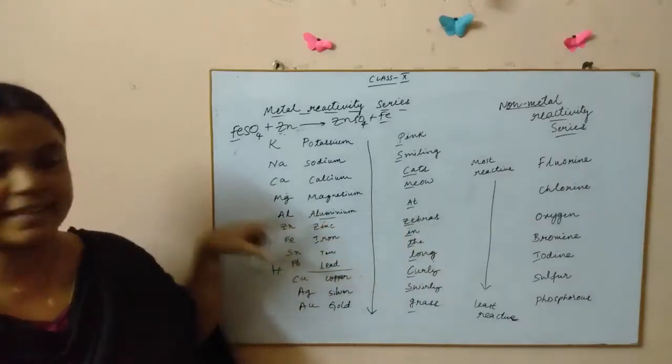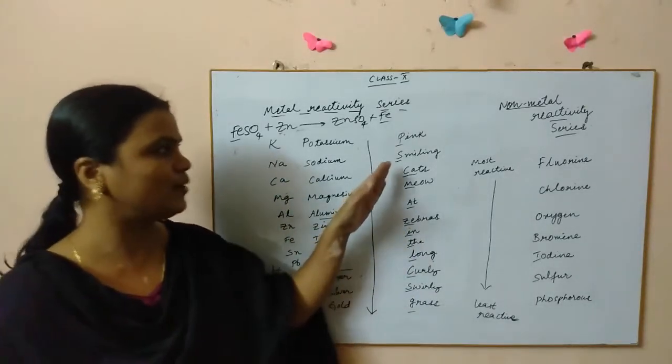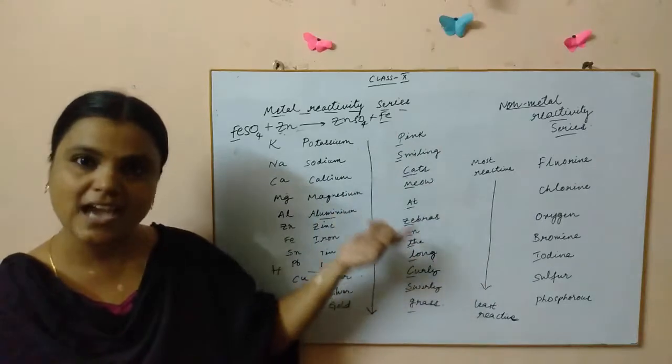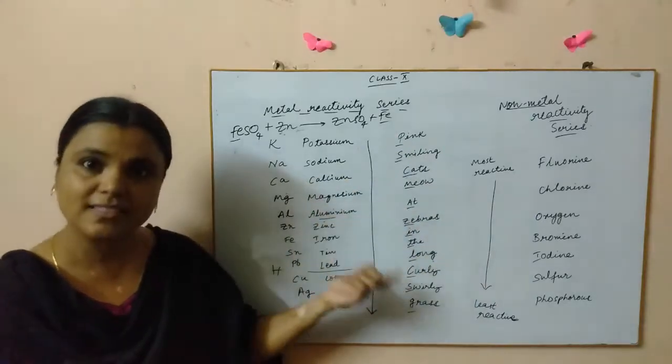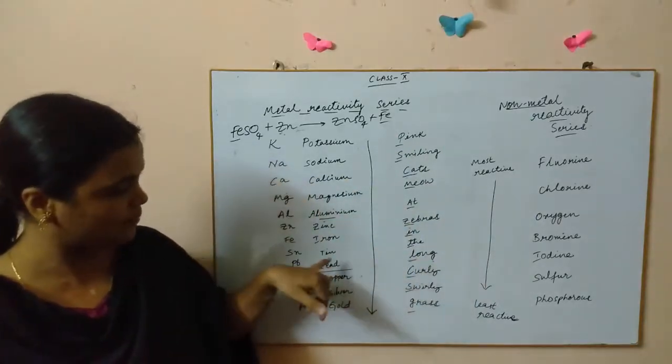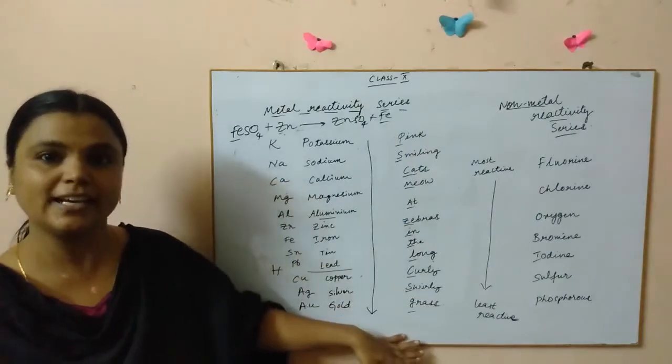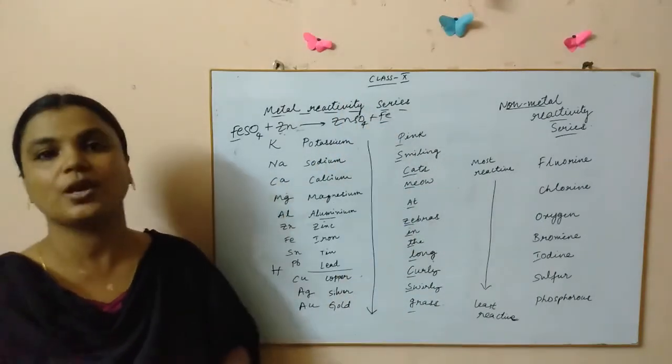The starting letter actually represents the name of the element. Here P stands for potassium, S for sodium, and so on. Ca for calcium, M for magnesium. Like that you can remember. Pink Smiling Cats Meow At Zebras In The Long - long means L means lead - Curly Swirly Grass.